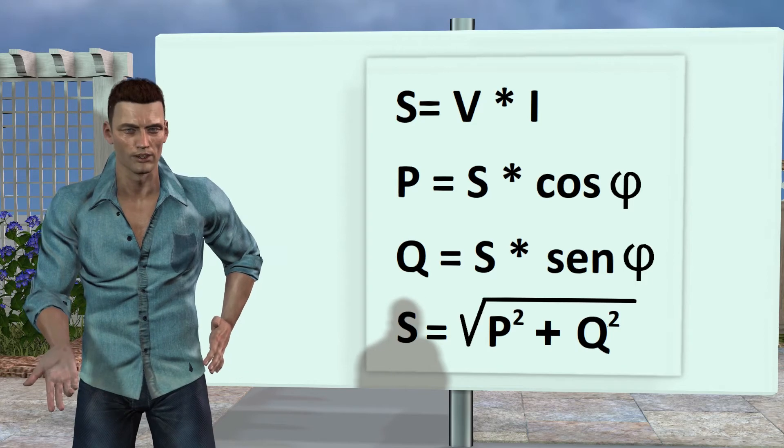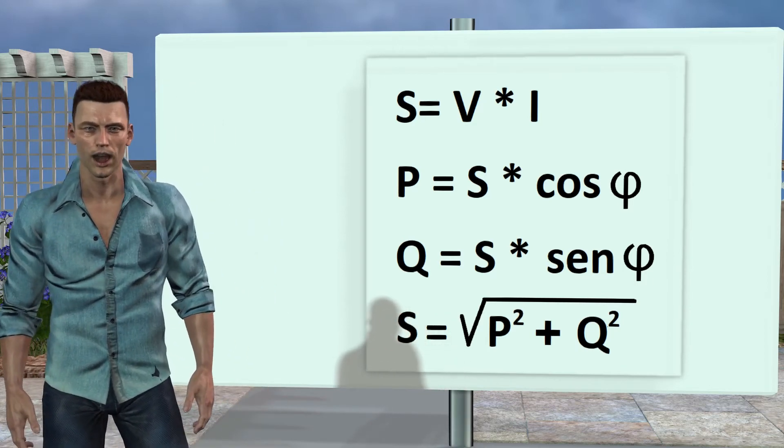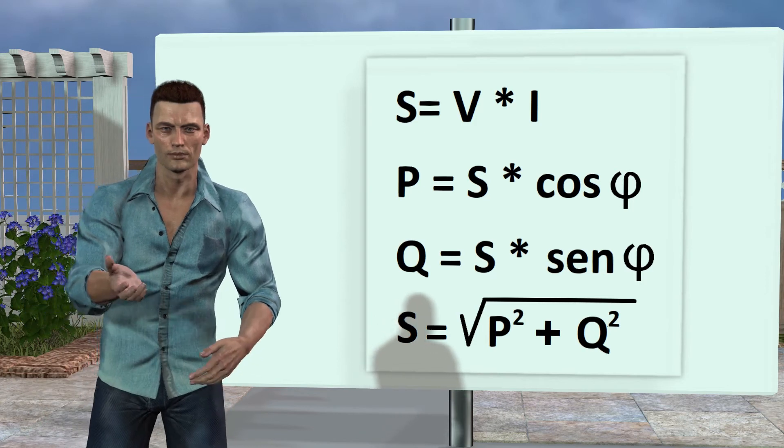The RMS active power is calculated multiplying the apparent power by the cosine of phi, where phi is the phase angle between voltage and current, also called DPF. P equals s cosine phi.